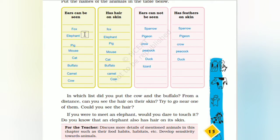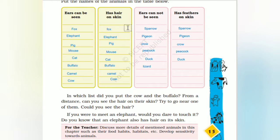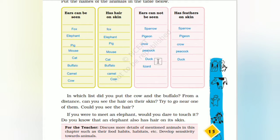The ears that can be seen: fox, elephant, pig, mouse, cat, buffalo, camel, and cow. The ears cannot be seen as the animal has hair on the skin. The ears cannot be seen as the animal has feathers on the skin.